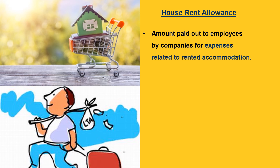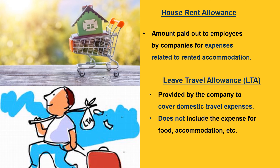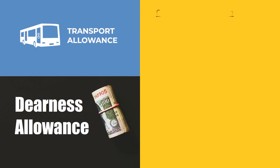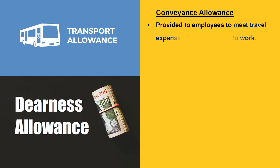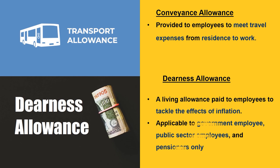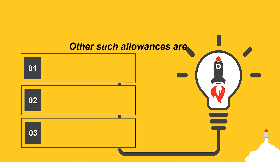House rent allowance (HRA) is the amount paid to employees by companies for expenses related to rented accommodation. Leave travel allowance (LTA) is provided by the company to cover domestic travel expenses, and it varies from company to company. Conveyance allowance is provided to employees to meet travel expenses from residence to work. Dearness allowance is a living allowance paid to employees to tackle the effects of inflation — applicable to government employees, public sector employees and pensioners only. Other allowances include special allowances, medical allowances and incentives.